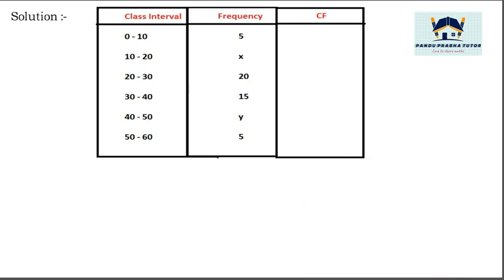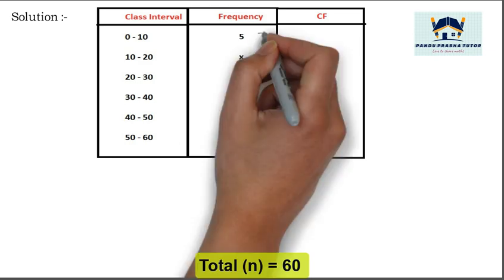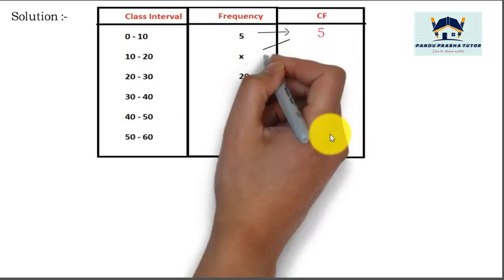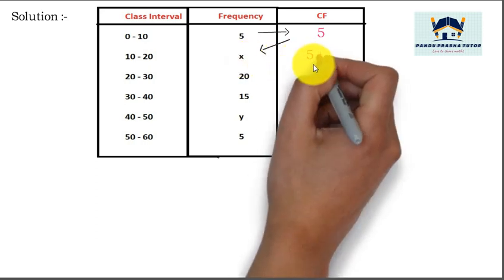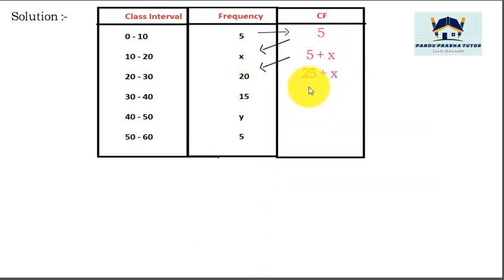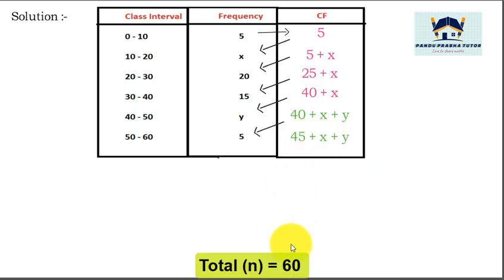Write the table with class interval, frequency, and cumulative frequency columns. Fill the cumulative frequency column: first frequency 5, cf = 5 for class interval 0–10. For 10–20, cf = 5 + x. For 20–30, cf = 25 + x. For 30–40, cf = 40 + x. For 40–50, cf = 40 + x + y. For 50–60, cf = 45 + x + y.